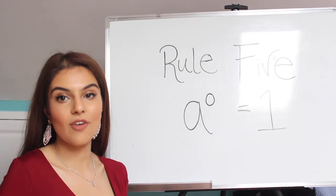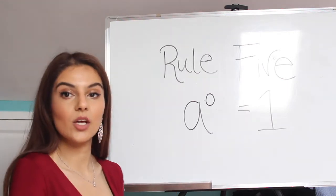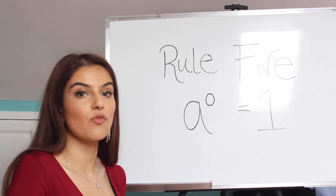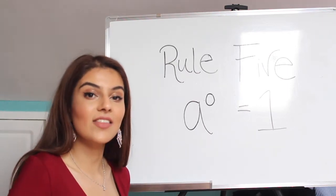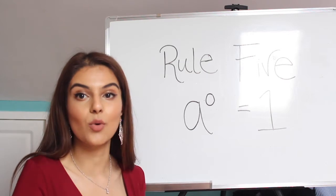With rule number 5, it's a to the power of 0 equals 1. And for that, we don't really need an example. Because you just need to remember, anything to the power of 0 equals 1.